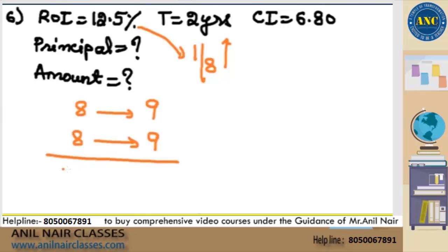So for 2 years, 8×8 are 64, 9×9 are 81. This is nothing but initial value. Initial is nothing but principal. The value which I got after increase is nothing but amount.